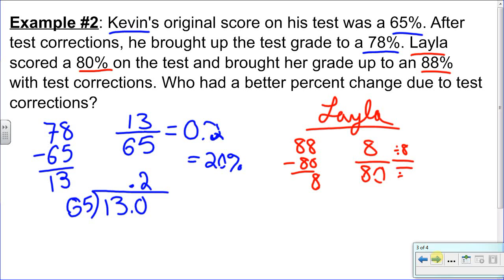We're actually going to simplify here. Make an equivalent fraction by dividing top and bottom, numerator and denominator by 8. We get 1 out of 10. And 1 out of 10 is a 10% increase in her grade.